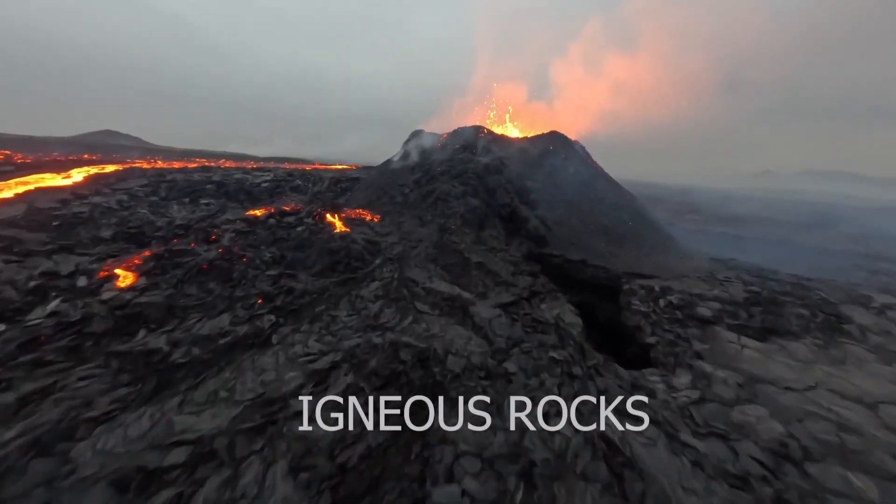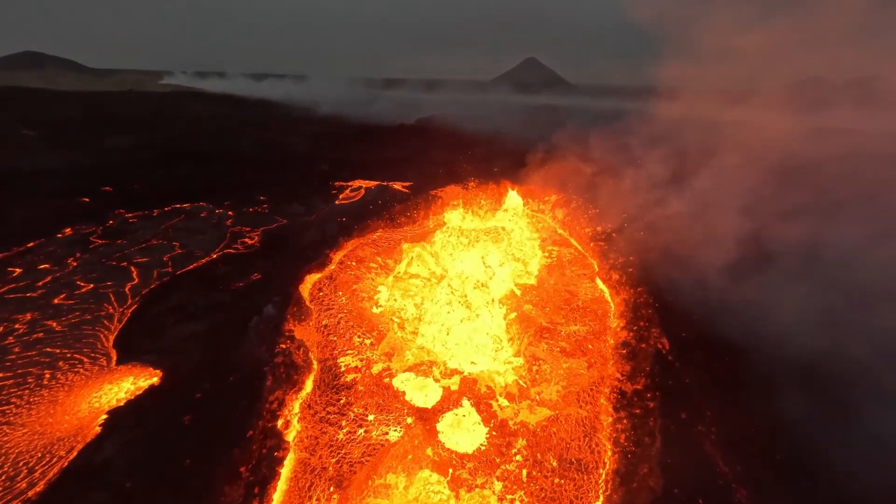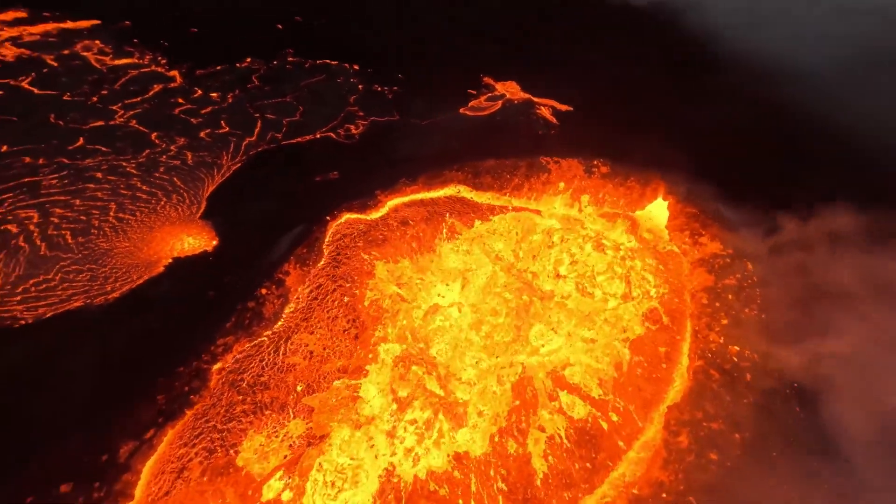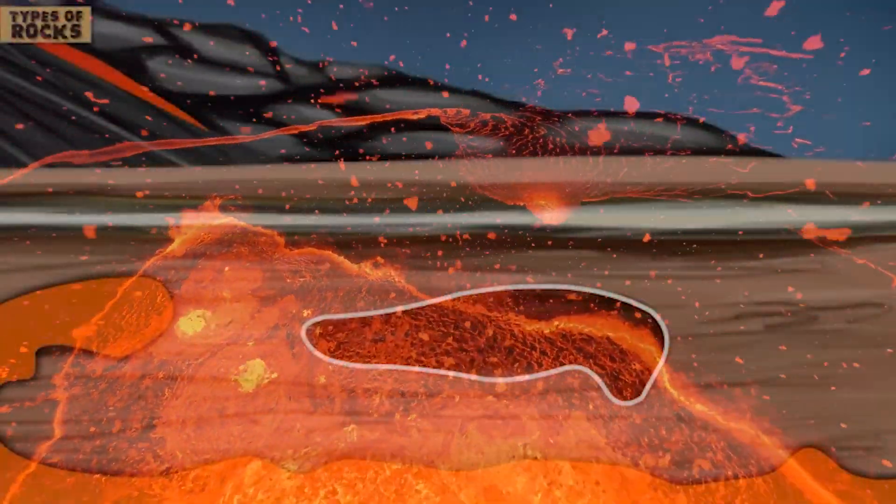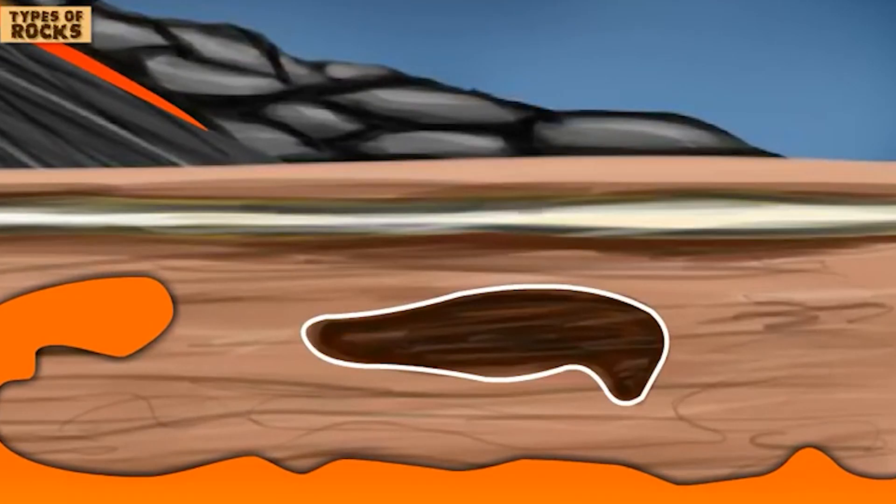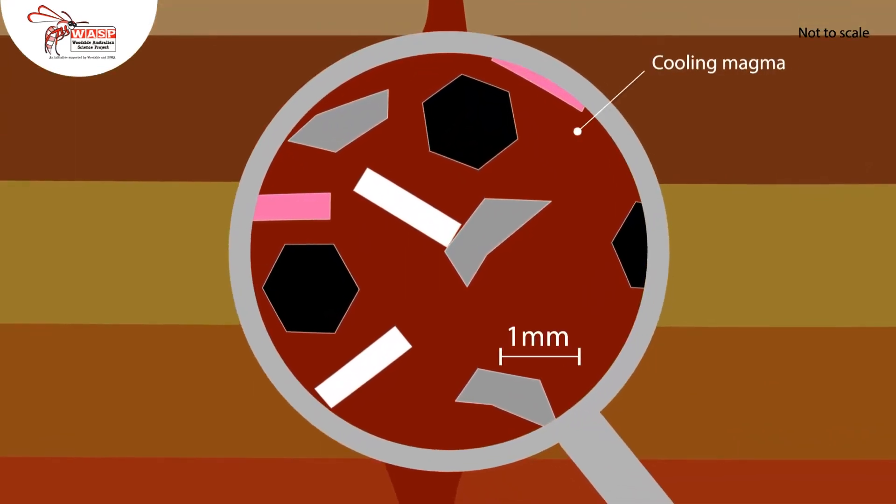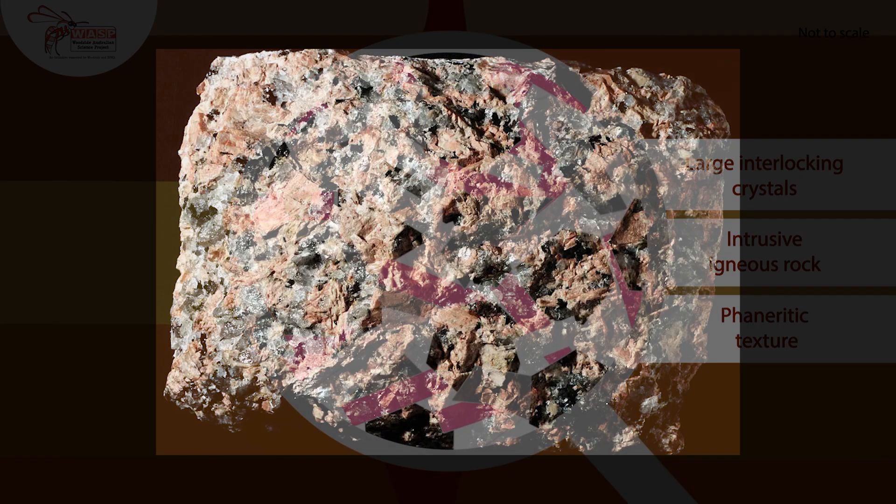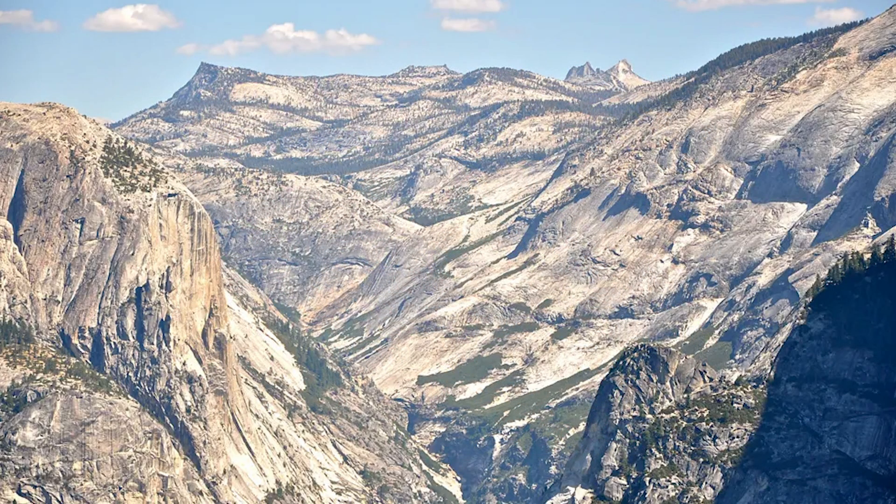The cycle begins with igneous rocks, which form from molten magma that cools and solidifies. There are two main types of igneous rocks: intrusive and extrusive. Intrusive igneous rocks form when magma cools beneath the earth's surface. Since the cooling process is slow, it allows large crystals to form. A great example of this is granite, which makes up the core of many mountain ranges.